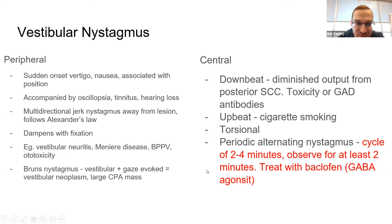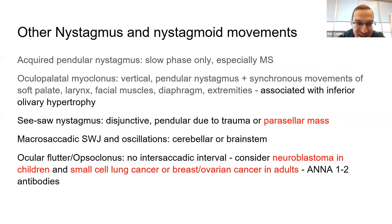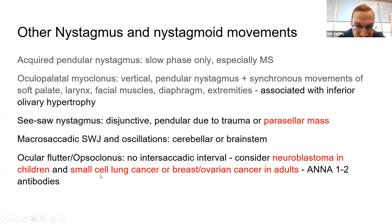There's a BCSC chart for localizing the nystagmus lesion. For opsoclonus: they like to ask about neuroblastoma in kids — opsoclonus can be an early presenting sign, and actually a good prognostic sign because the tumor is discovered. Check urine for catecholamine metabolites, which is about 96% sensitive. In adults, think ANA-1 or ANA-2 antibodies and paraneoplastic syndromes.